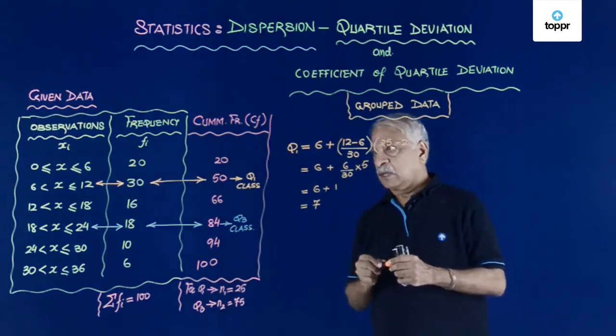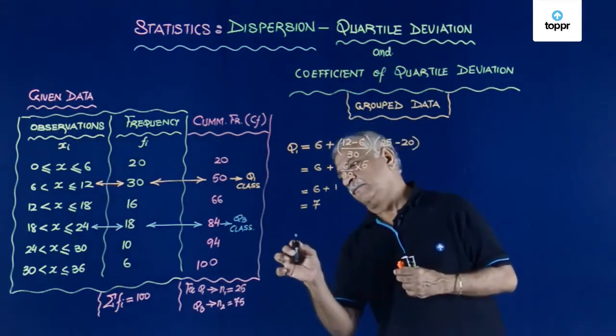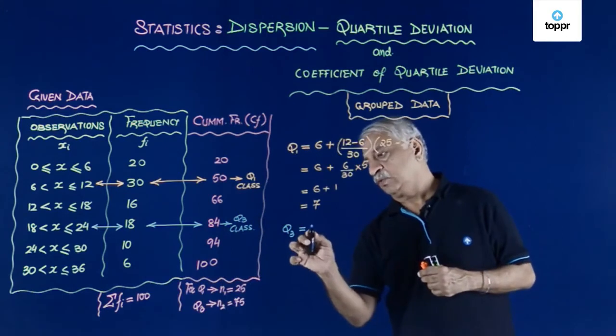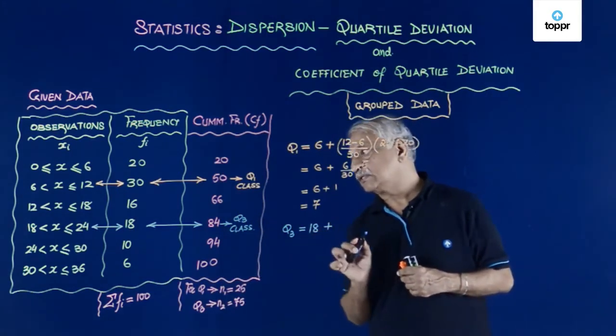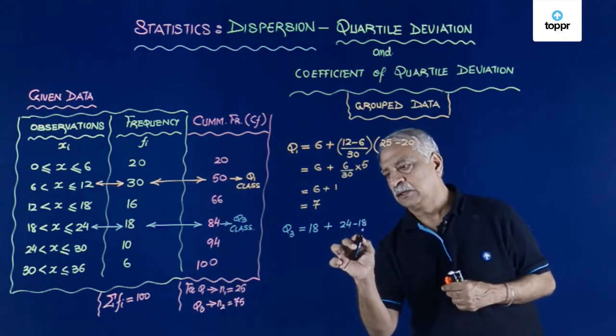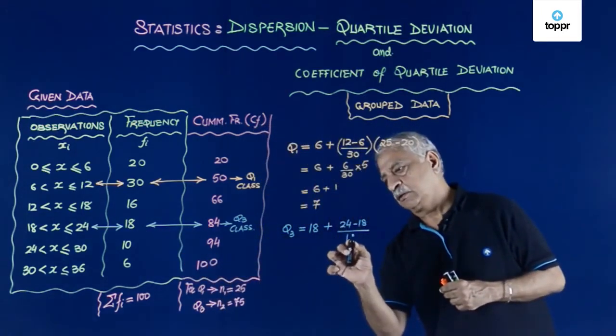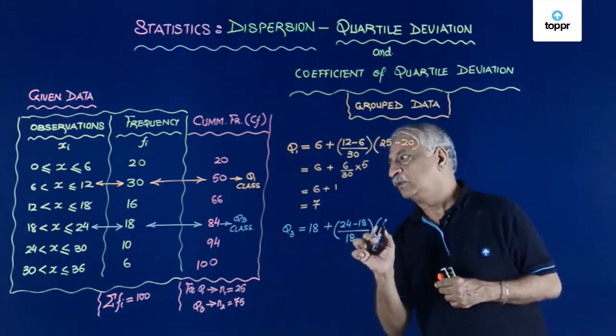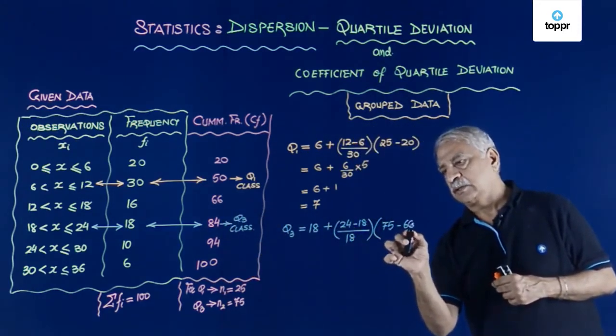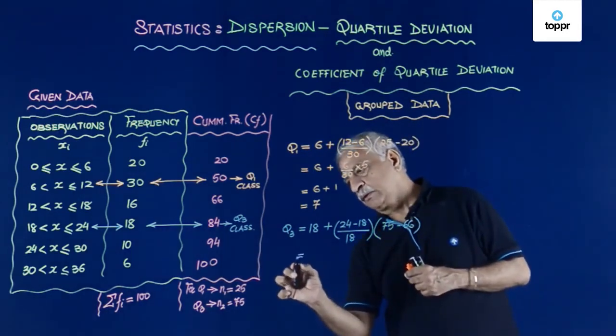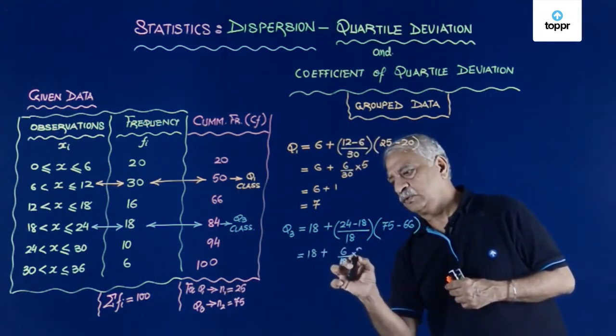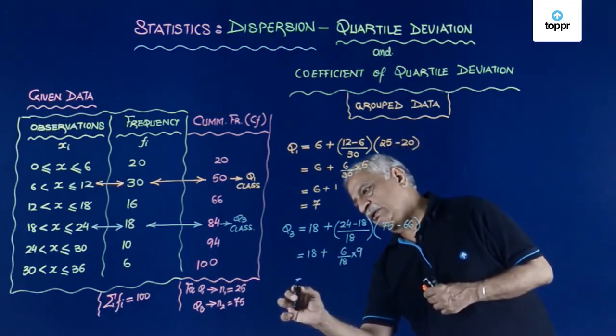Then I have for Q3, Q3 will be, I have the lower one as 18 plus, again I divide the interval 24 minus 18 upon 18 into 75 minus 66. So this gives me 18 plus 6 upon 18 into 9.